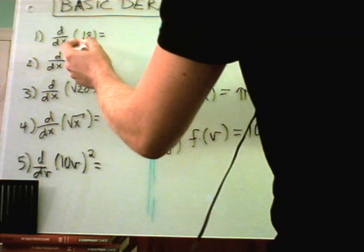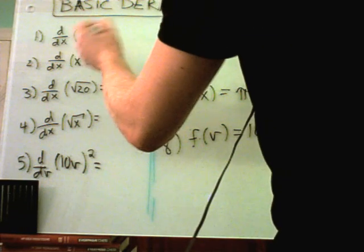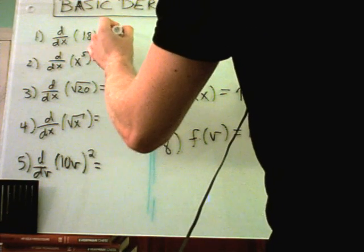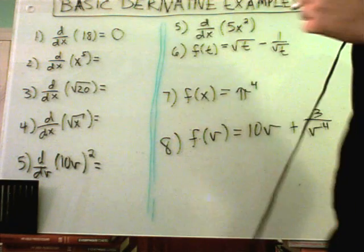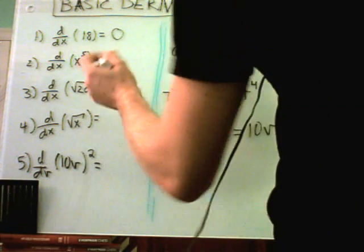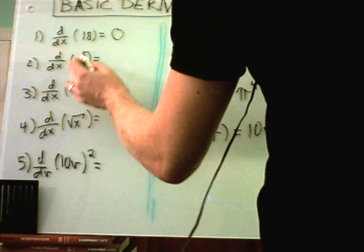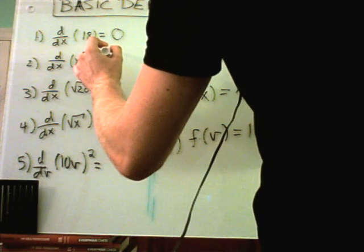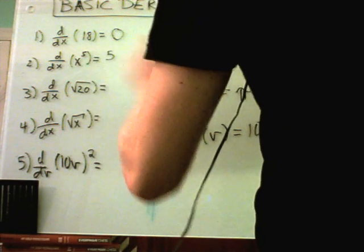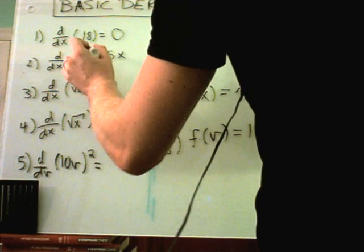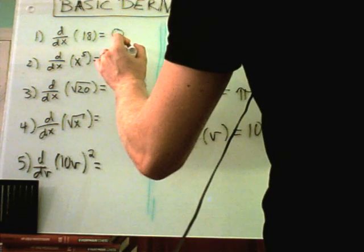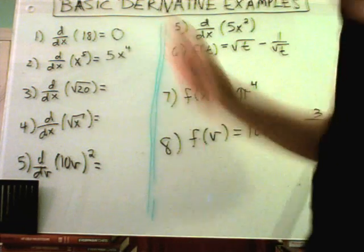Easy enough. The next example says if you had x raised to a power, simply bring that power out front, leave the x alone, and then take one away from the power. So the derivative of x to the fifth would be 5x to the fourth.